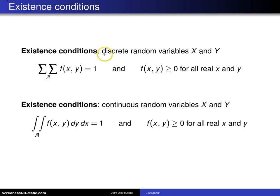First of all, in the case of discrete random variables X and Y, the joint probability mass function must sum to one, and that's the analog from the single summation in the univariate case, and also must be greater than or equal to zero for all real values of X and Y.